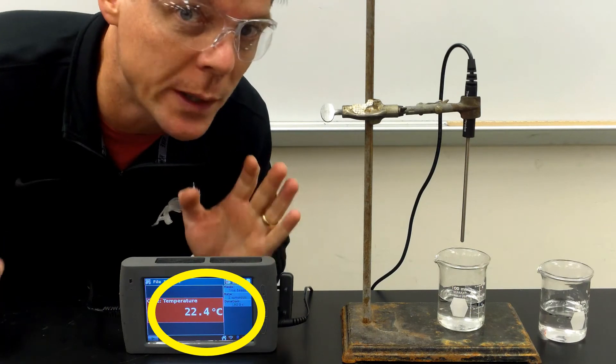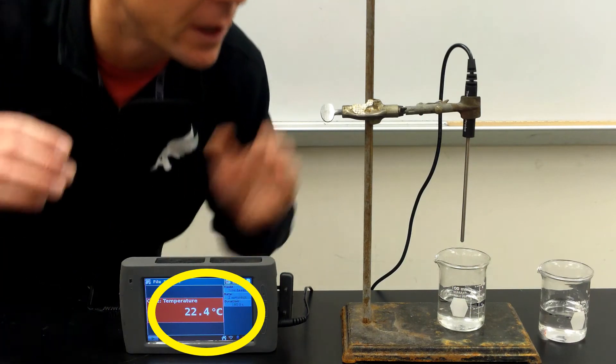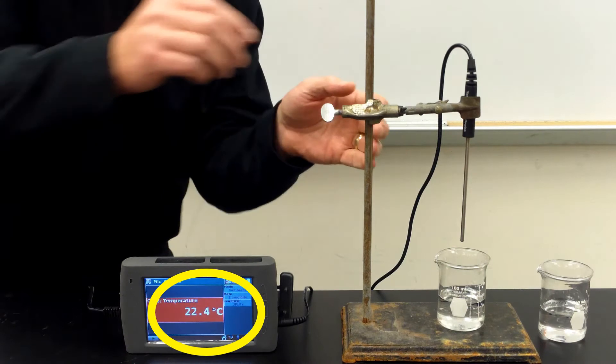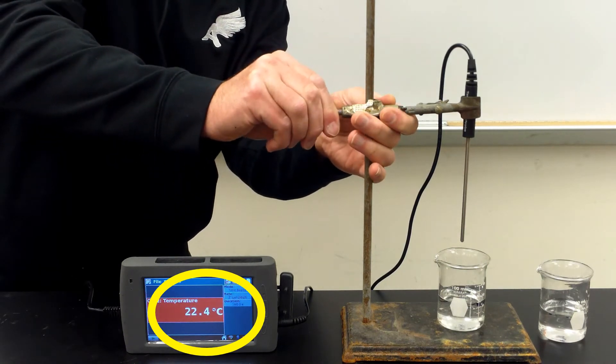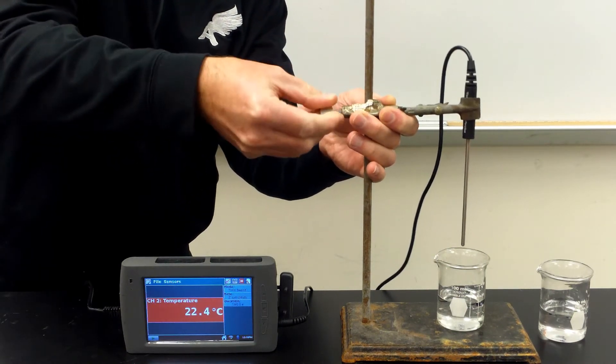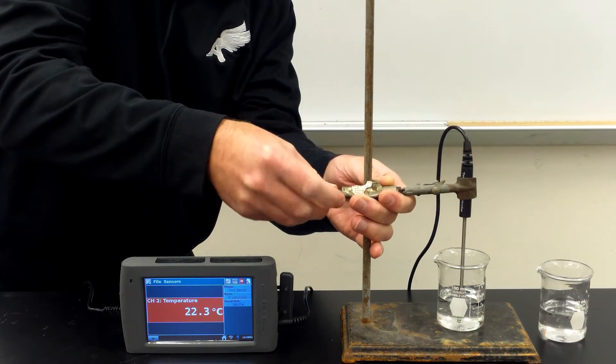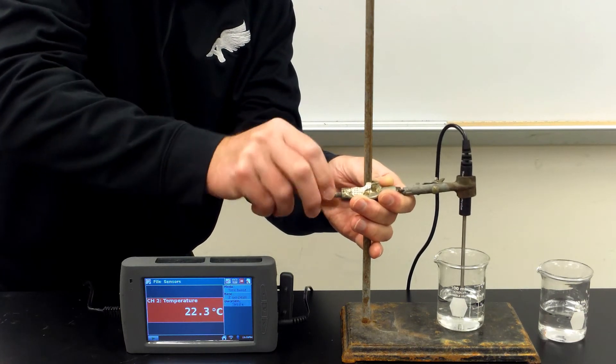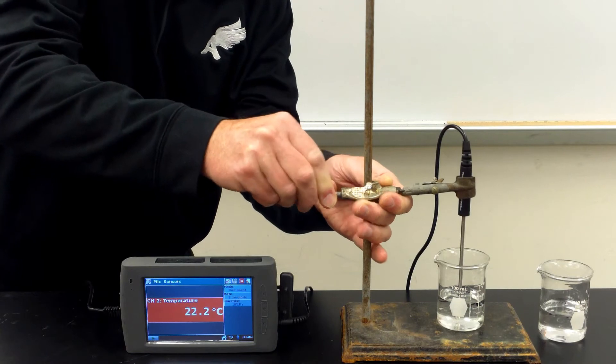So the temperature in the room currently is 22.4 degrees Celsius. Let's go ahead and measure the temperature of this liquid. Just lower the probe into the liquid, just tighten that to hold it in place.